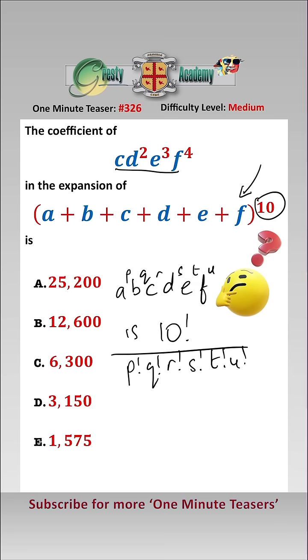And c, d squared, e cubed, f to the 4, we can rewrite that as a to the 0, b to the 0, c to the 1, d squared, e cubed,